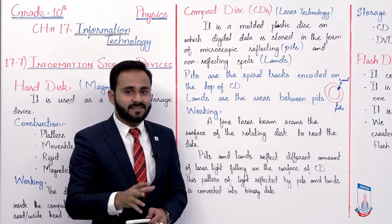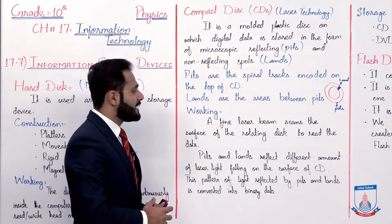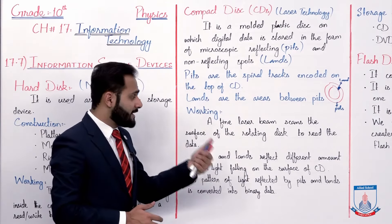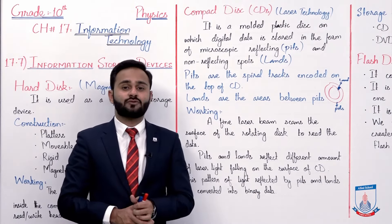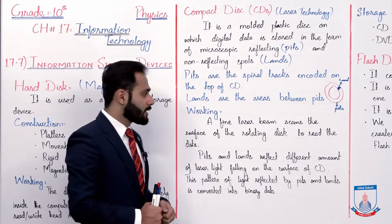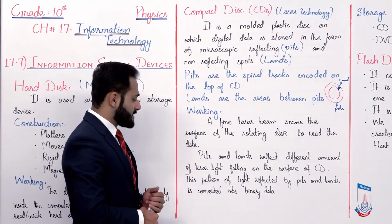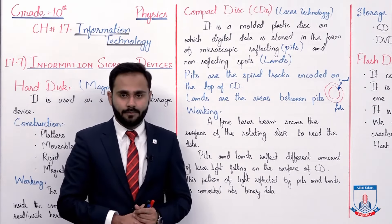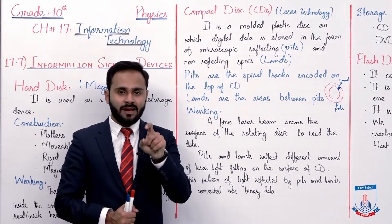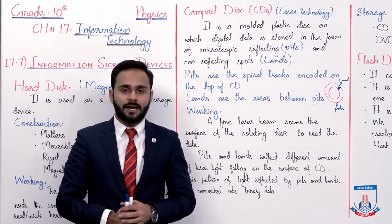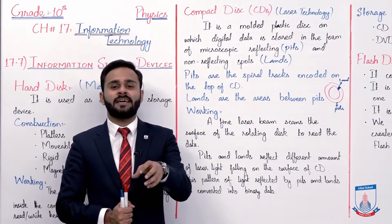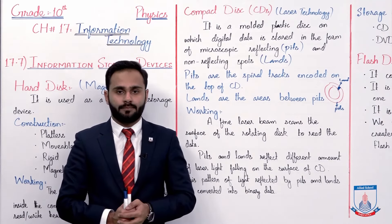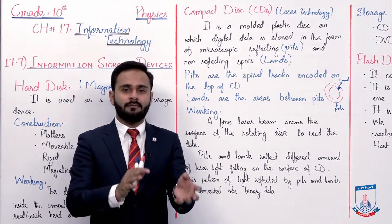Ab hum iski working discuss karte hain. A fine laser beam scans the surface of the rotating disk to read the data. Ek fine laser beam jo hai woh is disk ke surface ke upar move karti hai aur is tarah se uske upar data ko scan kar leti hai. Pits and lands reflect different amounts of laser light falling on the surface of the CD, and this pattern of reflected light is converted into binary data.